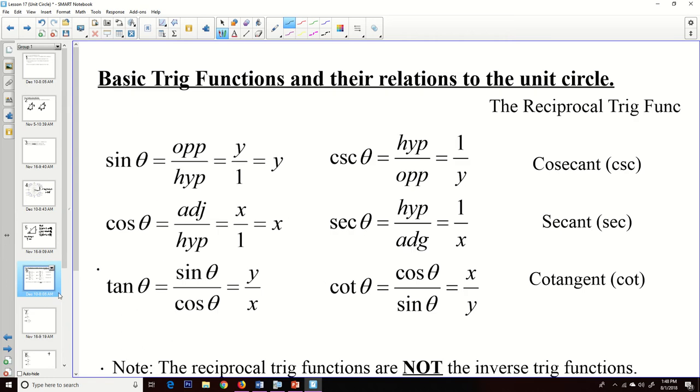Now we're also going to talk about tangent, and tangent is sine over cosine, and since we said sine was y and cosine was x, we can reduce this one down to just y over x. Now we have some reciprocal trig functions. We have cosecant, secant, and cotangent, and they are just the reciprocal of the sine, the cosine, and the tangent values. They're just flipping those values. So if sine is opposite over hypotenuse, cosecant is hypotenuse over opposite. If cosine is adjacent over hypotenuse, secant is hypotenuse over adjacent.